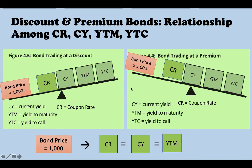If the bond's price is greater than the par value, which means it is trading at a premium, you would expect the coupon rate is greater than the current yield, greater than the yield to maturity, greater than the yield to call.